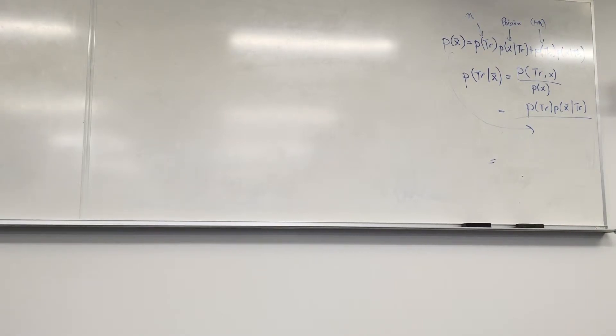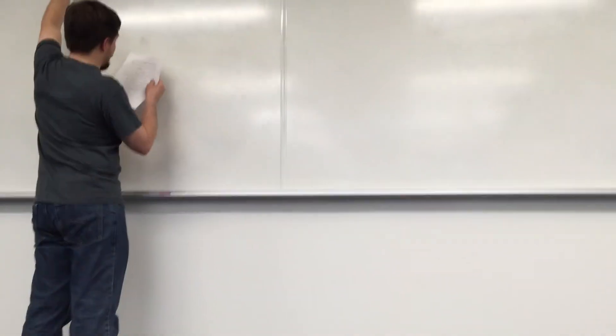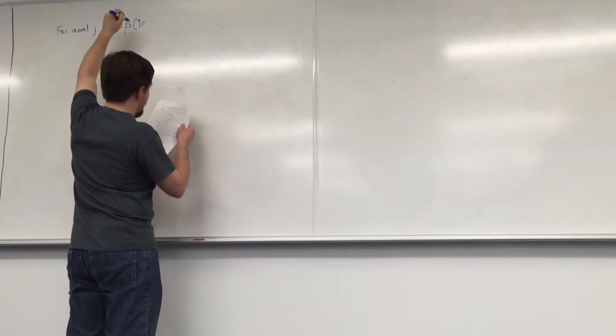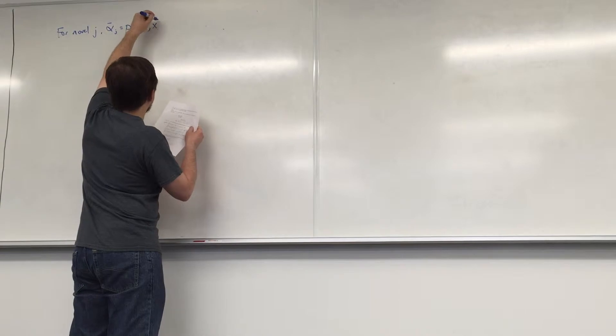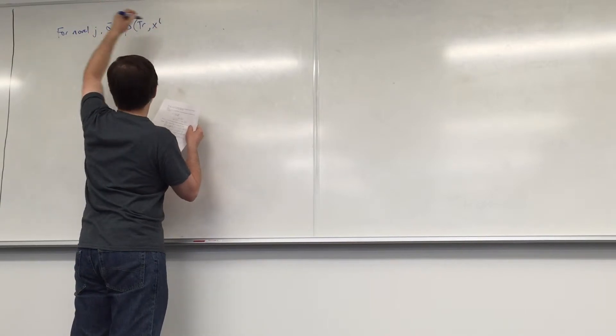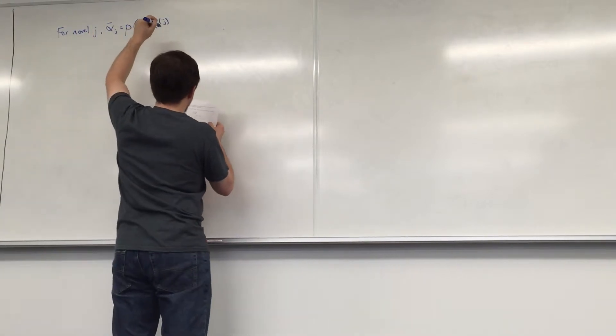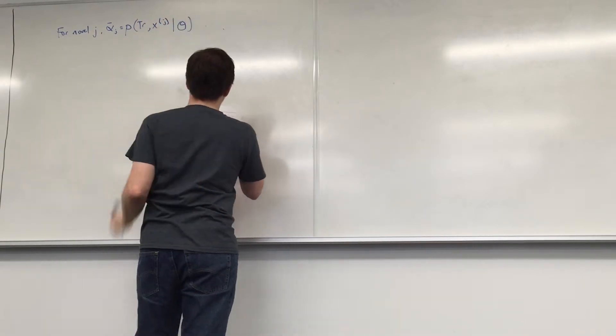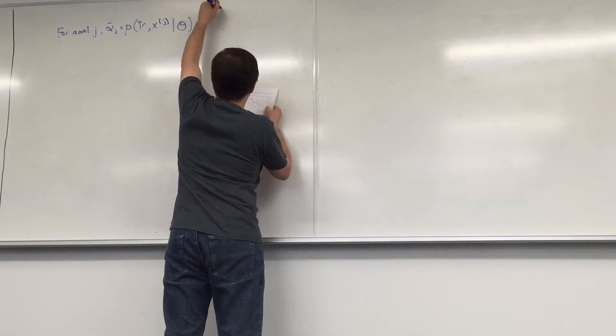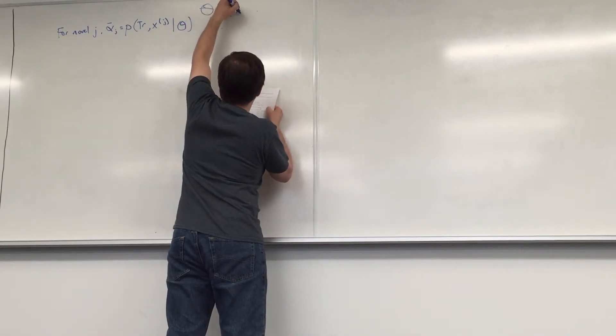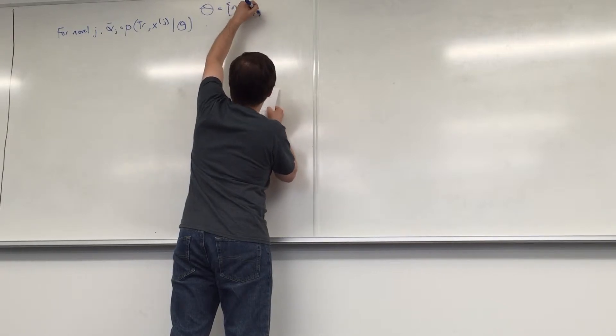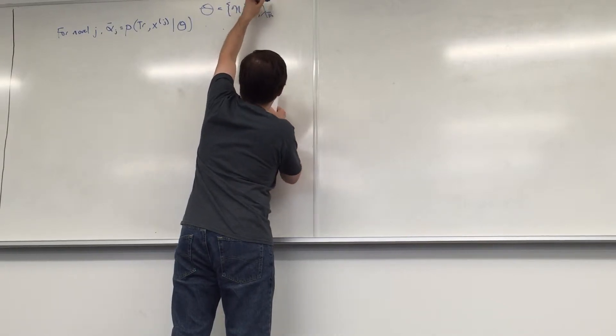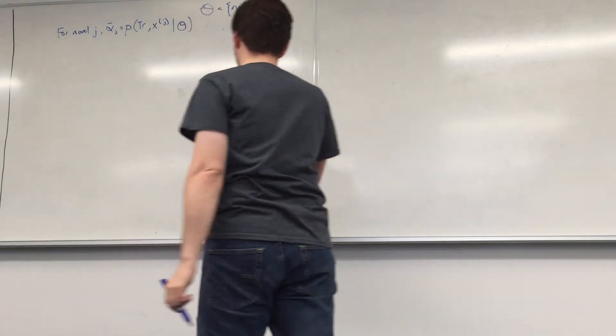Alpha j equals P of Trollope, x of j, given my current parameters. And my parameters in this case are eta, lambda Trollope, lambda, x of j.